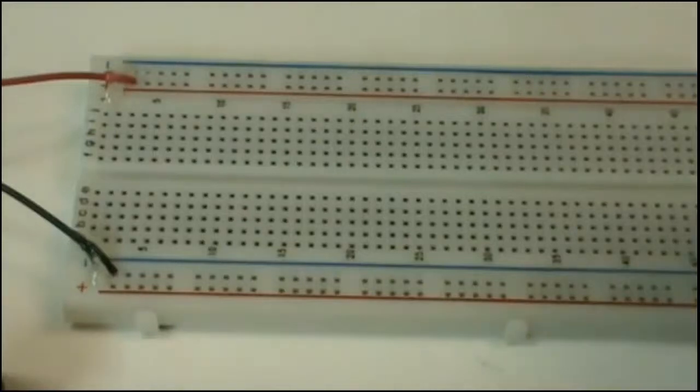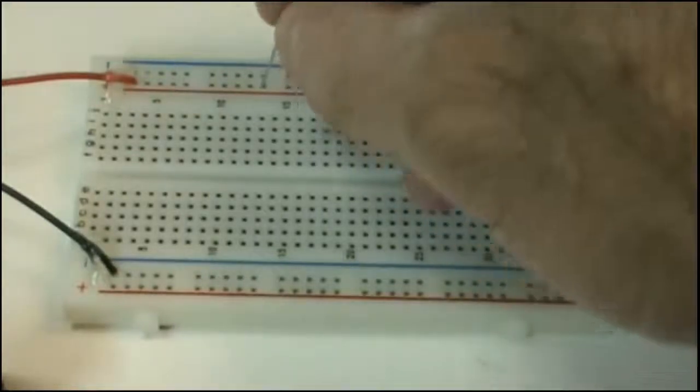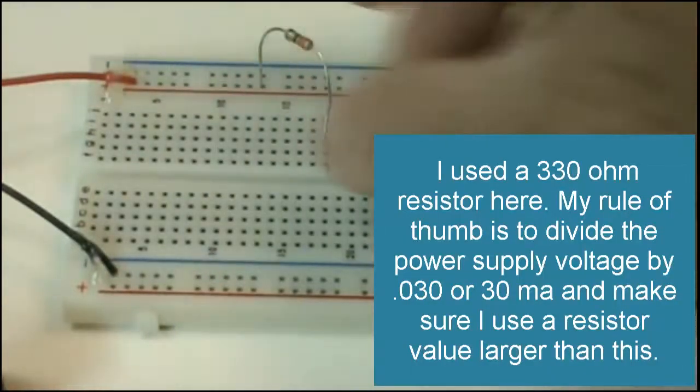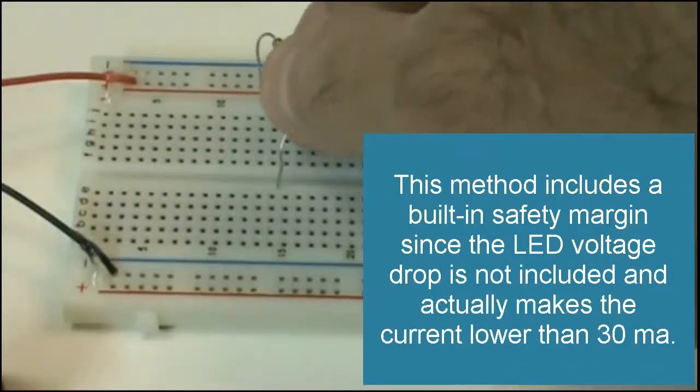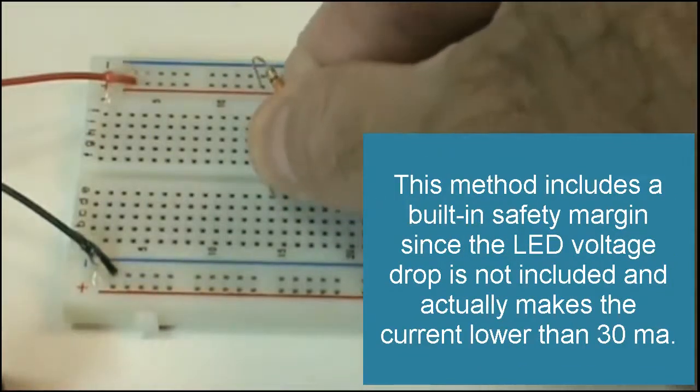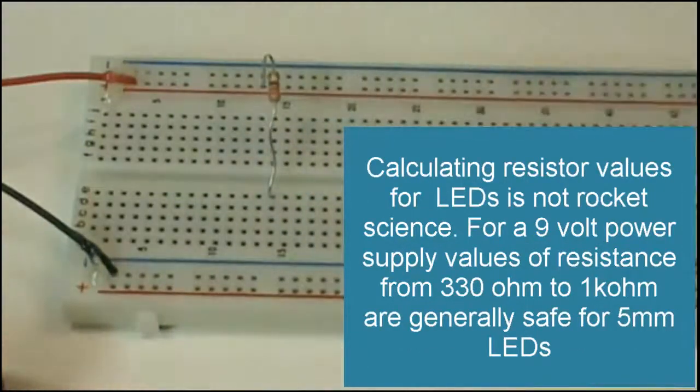I've calculated a value of resistance for this resistor and we'll talk about how that's done in a bit. I'm hooking one end of the resistor to the positive terminal of my breadboard and I'm going to hook the other side of the resistor across the gap here.